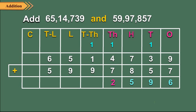Step 6: Now add the digits at the ten thousands place. 1 ten thousand carried forward, plus 1 ten thousand plus 9 ten thousands is equal to 11 ten thousands, which is 1 lakh plus 1 ten thousand. So we write 1 in the ten thousands column and carry forward 1 to the lakhs place.